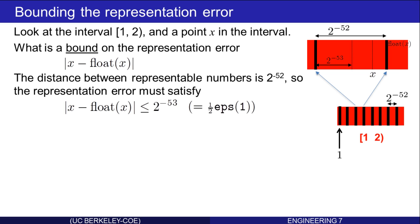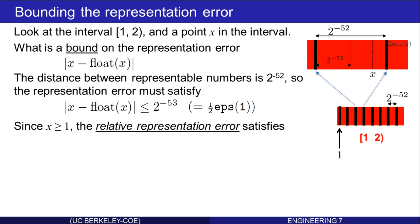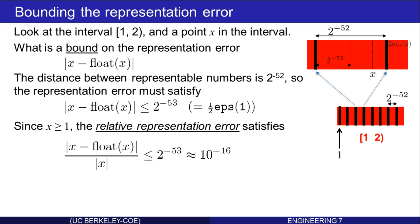Sometimes relative differences are also useful. Relative differences are obtained by taking an absolute difference and dividing by one of the quantities of interest. We'll normalize this difference by x. Dividing both sides by x, and using the fact that x is greater than or equal to 1, gives this. Notice I divided by x on the left, and I divided by 1 on the right — since 1 is smaller than x, that preserves the inequality.